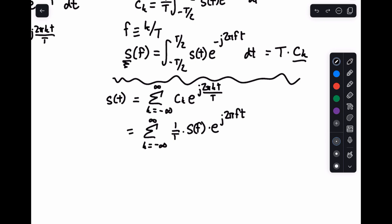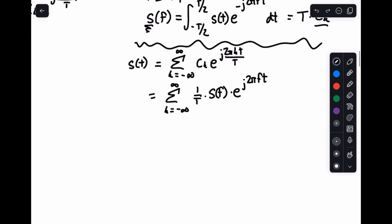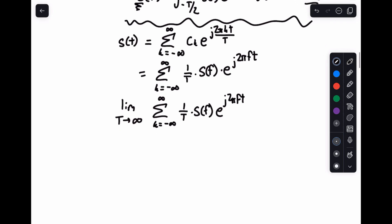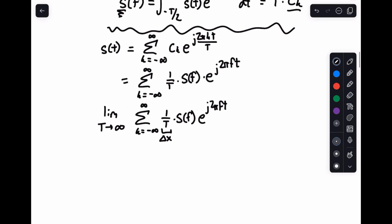And now we're going to take the limit as T goes to infinity. So we're going to take the limit as T approaches infinity of the sum from k equals minus infinity to infinity of 1 over T times S(f) e to the j 2π ft. And if you notice what is going on here, basically the spectral lines are going to become closer and closer together. And what you end up seeing is actually a sort of Riemann sum. This is sort of like your delta x because as T is going to infinity, 1 over T is getting smaller and smaller.